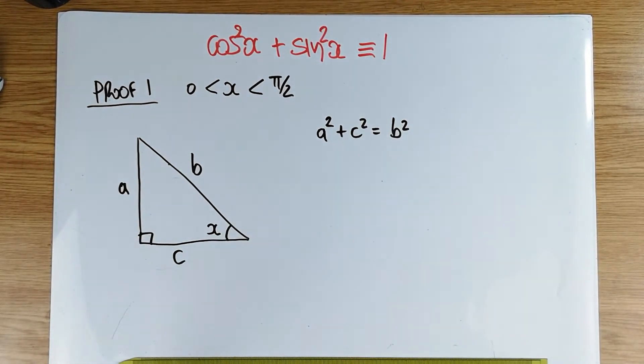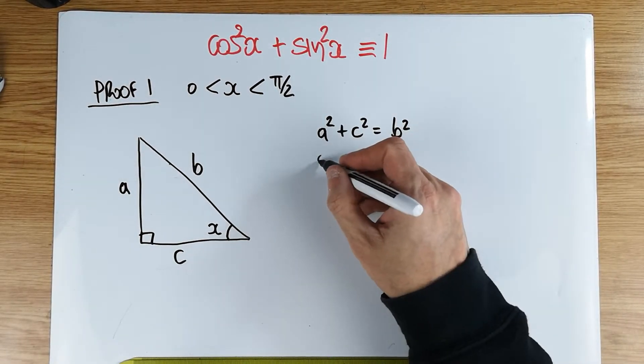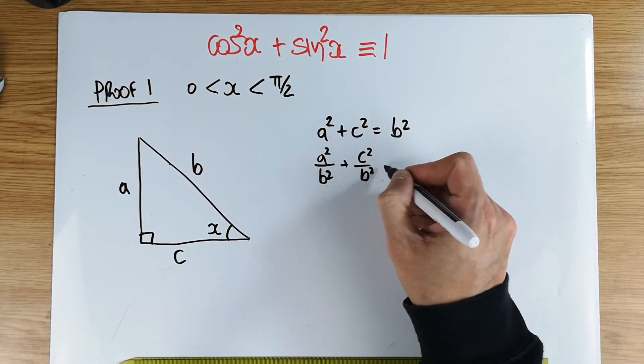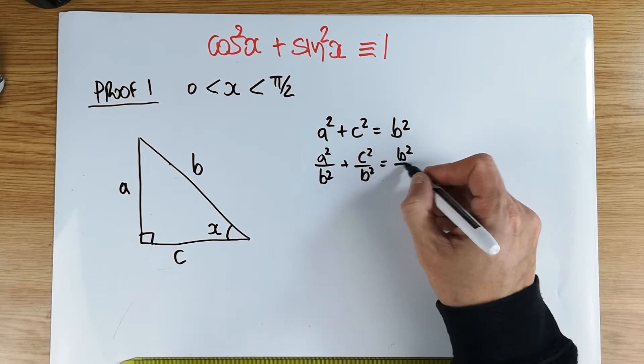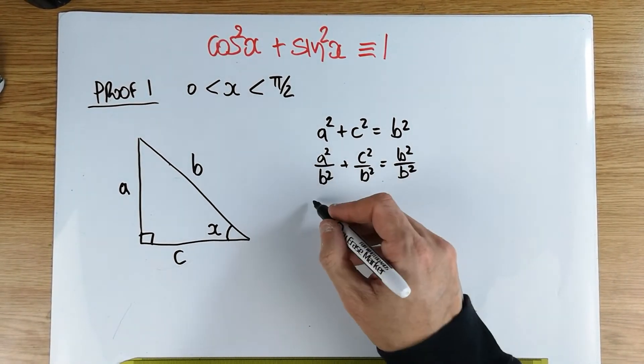If we divide in this particular equation by b squared, what we're trying to do is to create the one on the right-hand side. So a squared divided by b squared plus c squared divided by b squared is equal to, of course, b squared divided by b squared. So I'm going to do a little bit of a tidy.